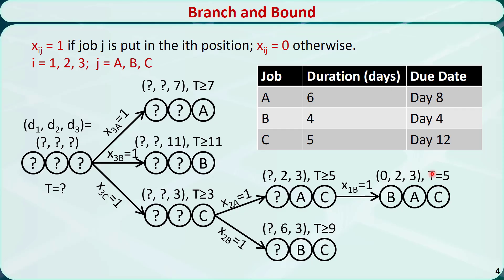Last, let's check the other branches. We know that 5 days is less than 7 days, so that branch is fathomed. Similarly, the other two branches are also fathomed. This is the optimal solution: the best order is B, A, and C, with a total delay of 5 days. That is how to solve the job shop scheduling problem. Thanks for watching.